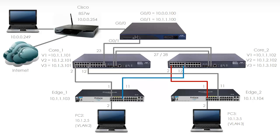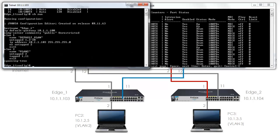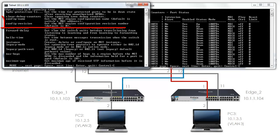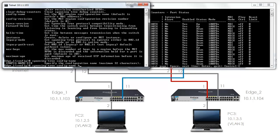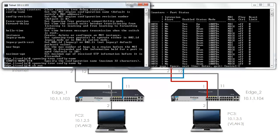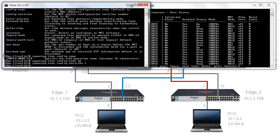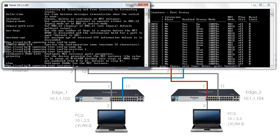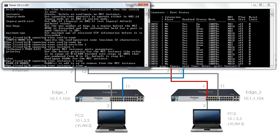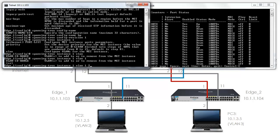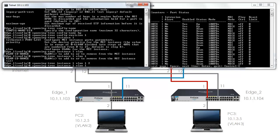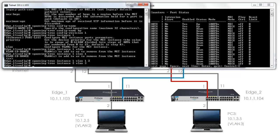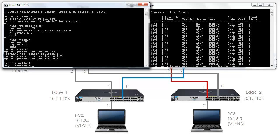The last step is to configure multiple spanning tree on the two ProCurve switches. On Edge 1, show run shows me that we've just got basic spanning tree enabled. Now we're going to type spanning tree - notice we have options for config name and config revision. Config name we're going to set to HP, config revision we're going to set to 1. Spanning tree instance 1 is going to have VLAN 1 and 2 mapped to it. Spanning tree instance 2 is going to have VLAN 3 mapped to it. Show run shows me my spanning tree configuration.